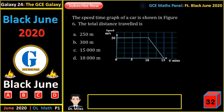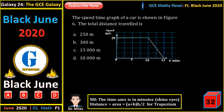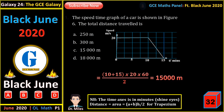The speed-time graph of a car is shown in the figure. What is the total distance traveled? The area under a speed-time graph gives the distance. Note that the time axis is in minutes, so we convert to seconds. The graph is a trapezium, so we use half the sum of the parallel sides times the height: (10 plus 15) divided by 2, times the height of 20, then multiplied by 60 to convert minutes to seconds. That gives us 15,000 meters.